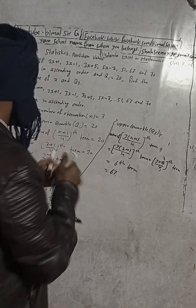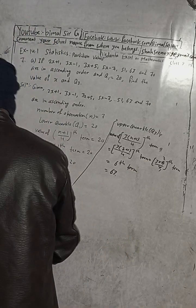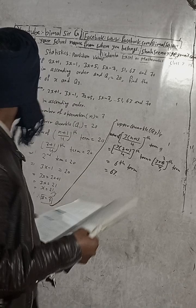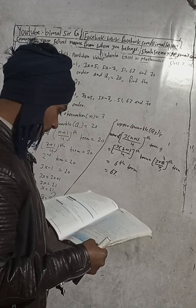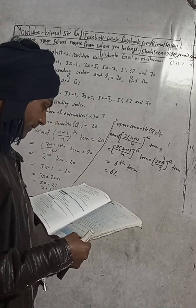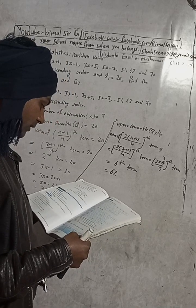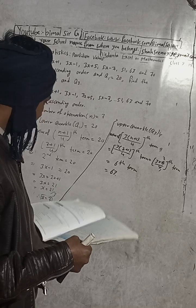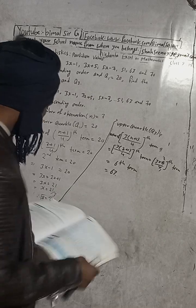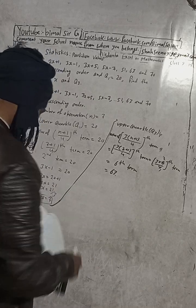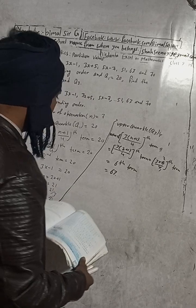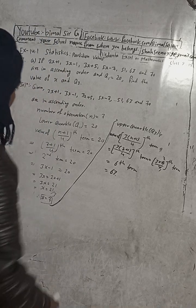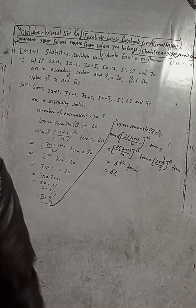The answer in the book is: x equals 7, and Q3 equals 63, which is the upper quartile.